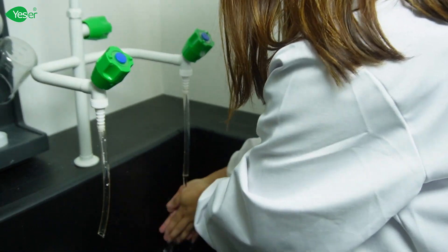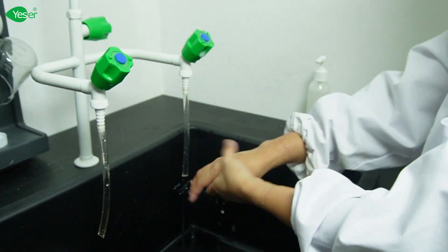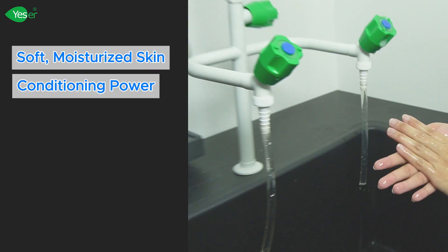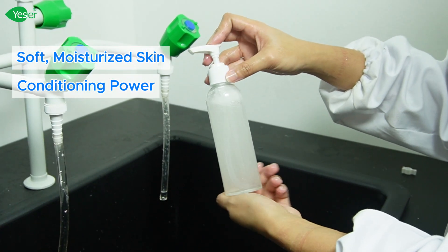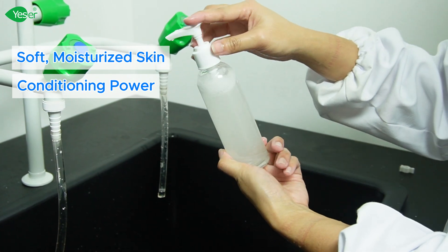After drying, you'll find that your hands feel soft, moisturized, and refreshed. This is a testament to the conditioning power of hydrolyzed silk protein and PQ-7, which leave the skin feeling just as nourished as they would your hair.